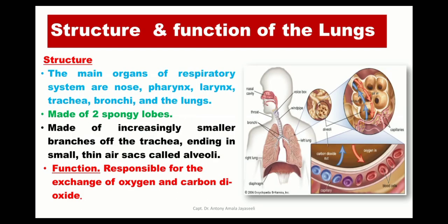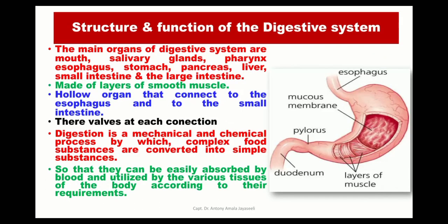Moving on to the respiratory system, the lungs are the main organelles responsible for the exchange of oxygen and carbon dioxide. The digestive system starts with the mouth, moves to the salivary glands, pharynx, esophagus, stomach, liver, small intestine, and then the large intestine. Digestion is a mechanical and chemical process by which the complex food we consume is converted into simple substances so that they can be easily absorbed by the blood and utilized by the various tissues of the body.